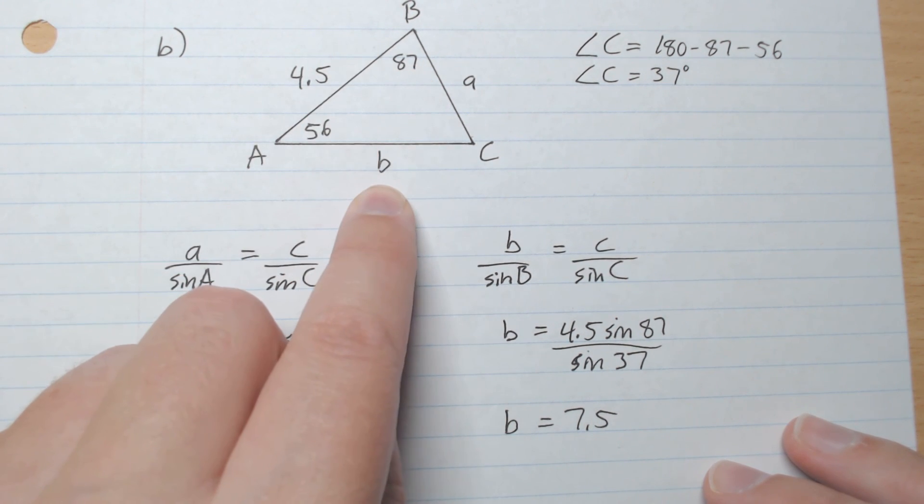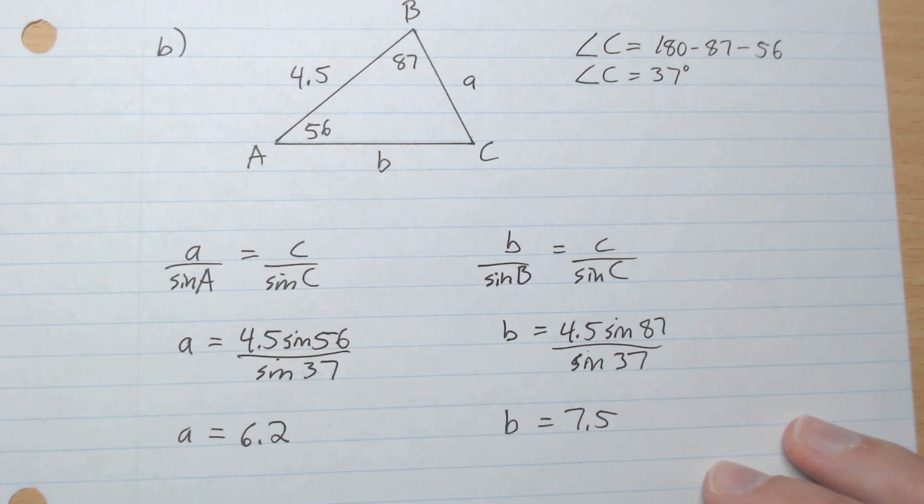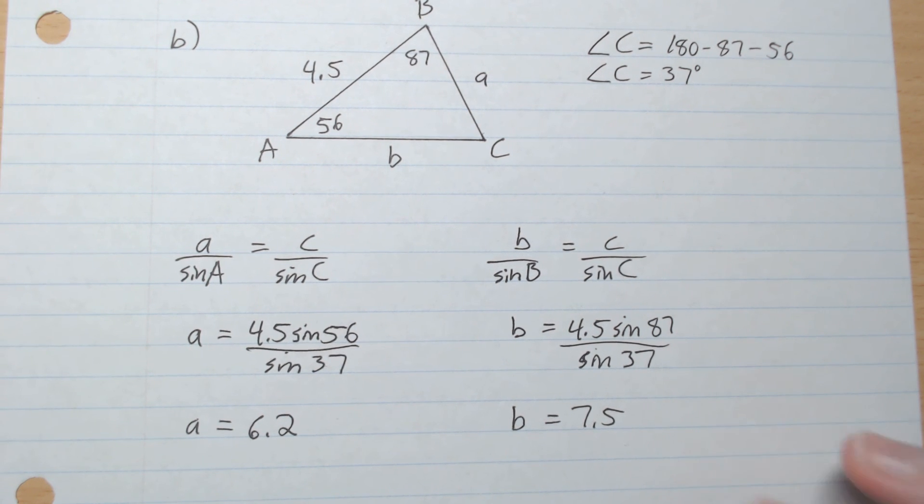We have angle B but not side b. Multiply sine B to both sides, plug in what we know, and b is 7.5.